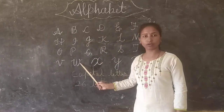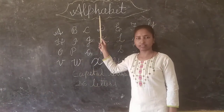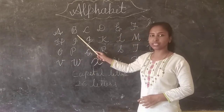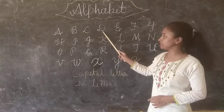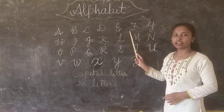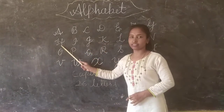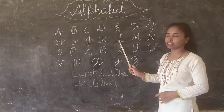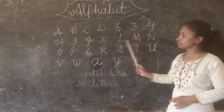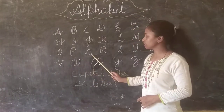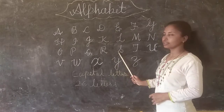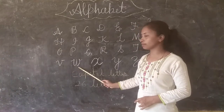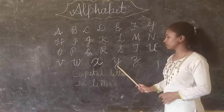These letters are called alphabet. Now let us read it after me. First is A, B, C, D, E, F, G, H, I, J, K, L, M, N, O, P, Q, R, S, T, U, V, W, X, Y, and Z.